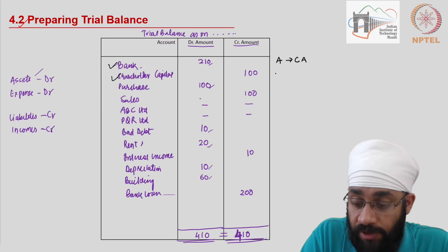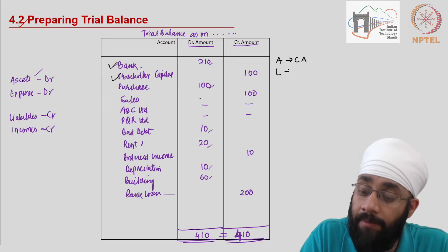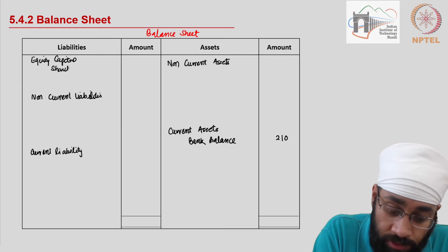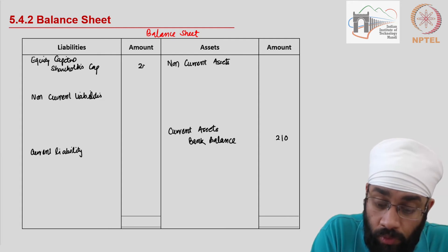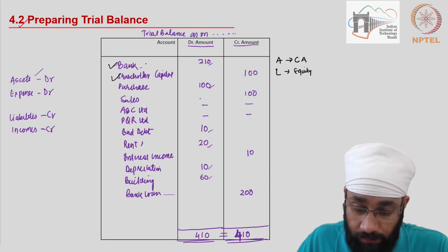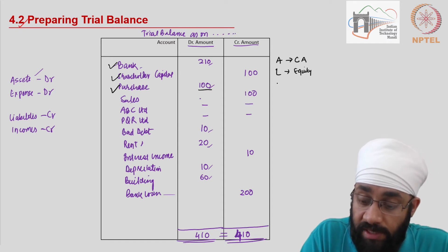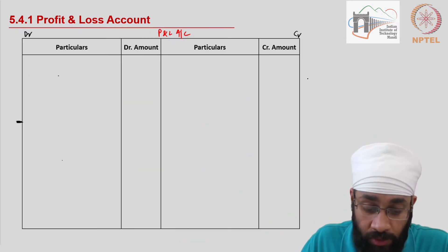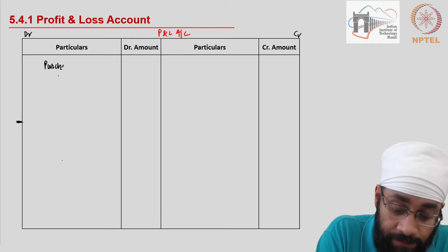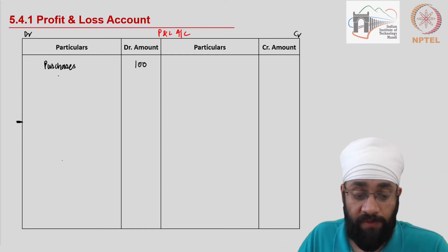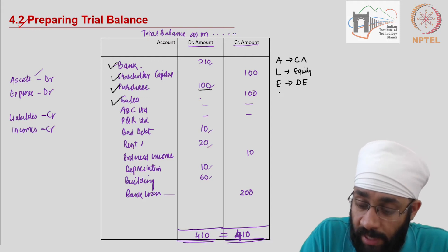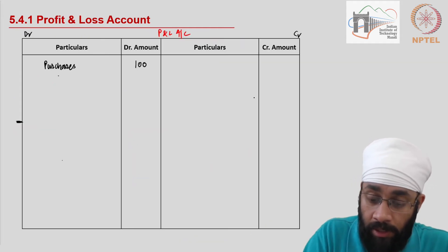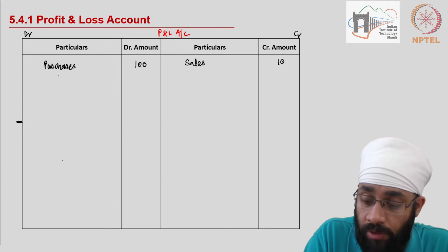The next item is shareholder capital of 100, which is a liability item going under equity or shareholder capital, so I'll write shareholders capital as 100. Next is purchases of 100 - purchases is an expense and also a direct expense, so 100 is written in the profit and loss account. Then sales - sale is an income and an operating income, written on the credit side of the profit and loss account.